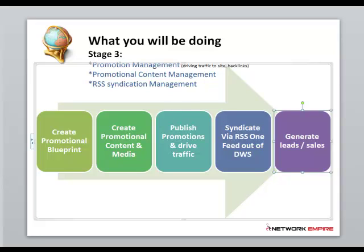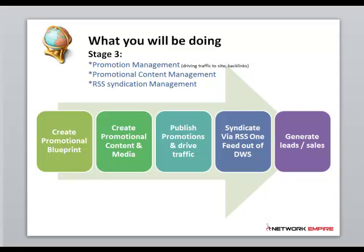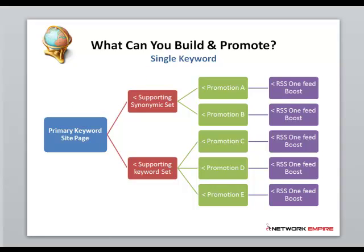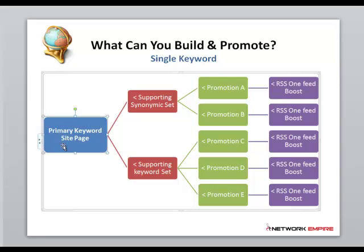Let's take a top-level overview of what we're essentially dealing with. If we're promoting a single keyword, there's our one-page website with one keyword. It has a synonymic set bound to it with the keywords defining that page that we're interested in getting ranked for. The promotional plan gives us all the promotions we need to do for driving traffic to that primary site. As we publish our promotions and log where we publish them, the RSS OneFeed boost kicks in and drives backlinks to our backlinks, which spreads our word and drives more traffic to our site.